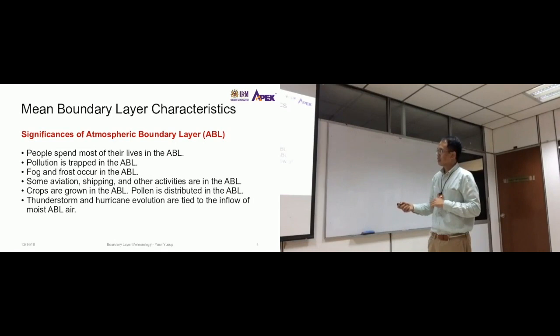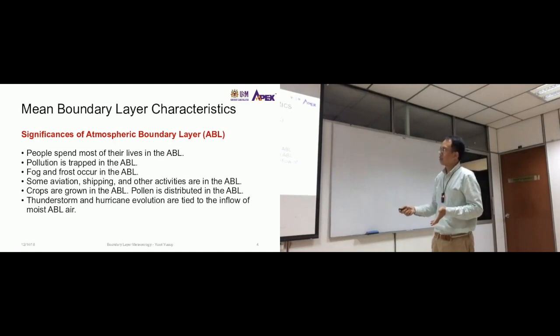You can think of the boundary layer as a cap. The topmost boundary layer is a cap of pollution. The pollution rarely exceeds through the boundary layer to go to the upper layer. Fog and frost occur in the boundary layer. Aviation, shipping, other activities are in the ABL. Crops are grown in ABL.